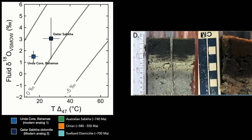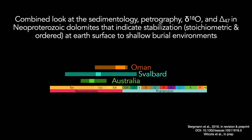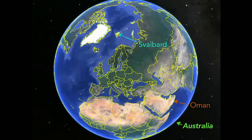Going back to this potential second modern analog from the Qatar sabkas, we can look at the combined measurements of delta-O18, clumped isotope temperature, and calculated fluid. In these environments it is more evaporative — the delta-O18 is heavier — and it's warmer, with temperatures of 28–30 degrees C on average but getting much warmer in the summer. We can take these two modern analogs and go back to the Neoproterozoic and see what happens. I'd like to show results from three field sites: Oman in the Middle East, Svalbard north of the Arctic Circle, and Australia.